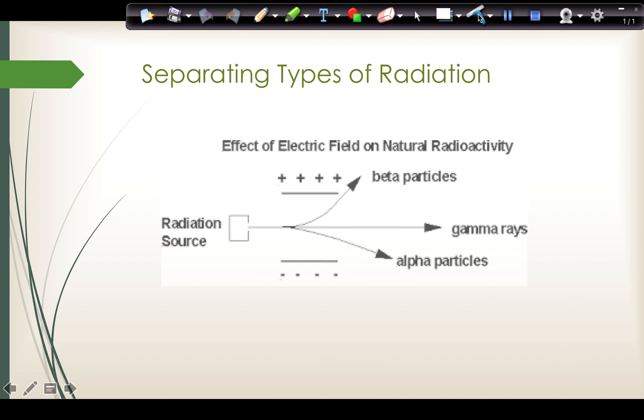If we have different types of radiation, we can separate them by an electric field because beta particles are negative so they would attract a positive plate. Alpha particles are positive so they would attract a negative plate. And gamma rays are neutral so they could not be separated by charge at all.